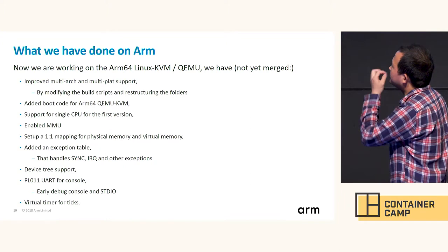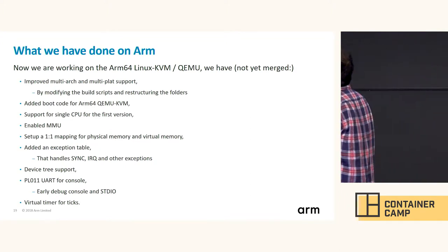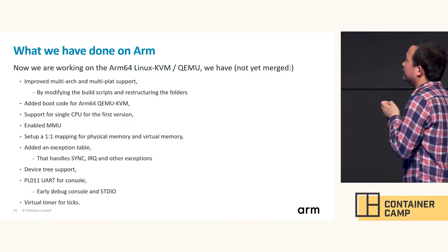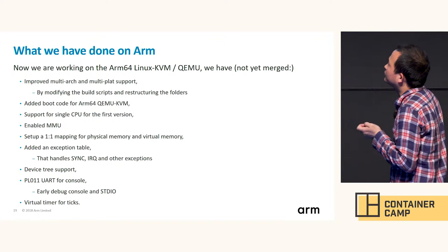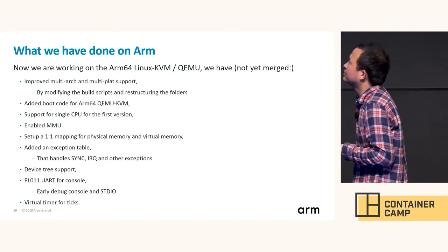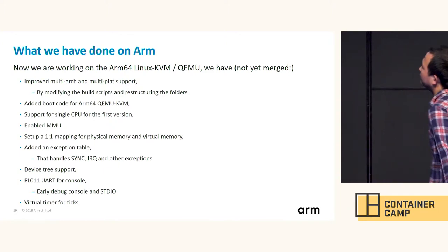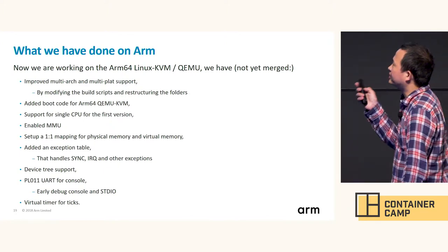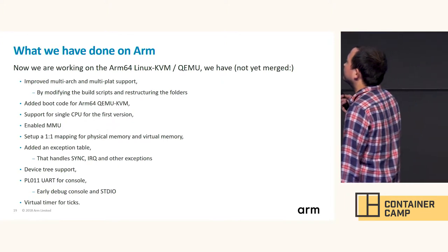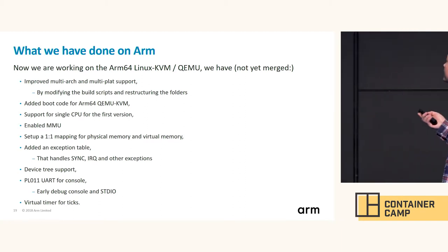We have added an exception table to handle sync, IRQ, and other exceptions. Device tree support has been added from the beginning, which improves UniKraft's compatibility on ARM platforms. A UART library was added for the early debug console and stdio, along with ticks support for printing timestamps on debug messages.